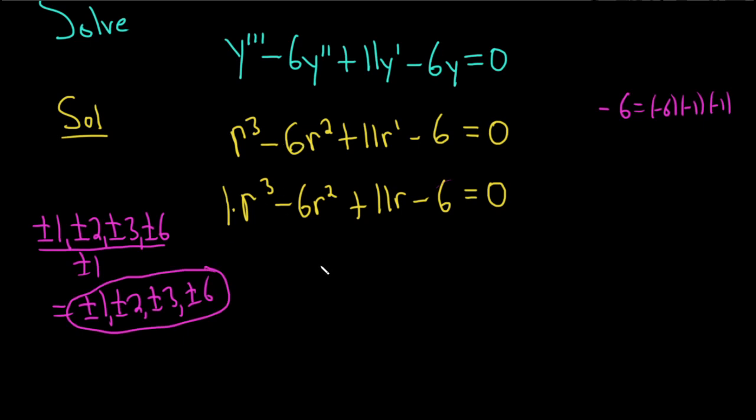So once you have these, what you do is you test them using synthetic division. Let's start with the easiest possible number to test. Let's check the number 1. So to check 1 via synthetic division, you write down the number, and then here we write the coefficients of our cubic equation. So 1, negative 6, 11, and then negative 6. Then you draw a line like this.